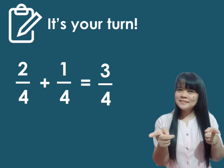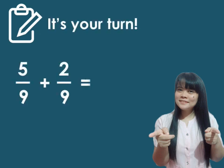Okay, next. 5 over 9 plus 2 over 9. What is the answer? Correct. 7 over 9.